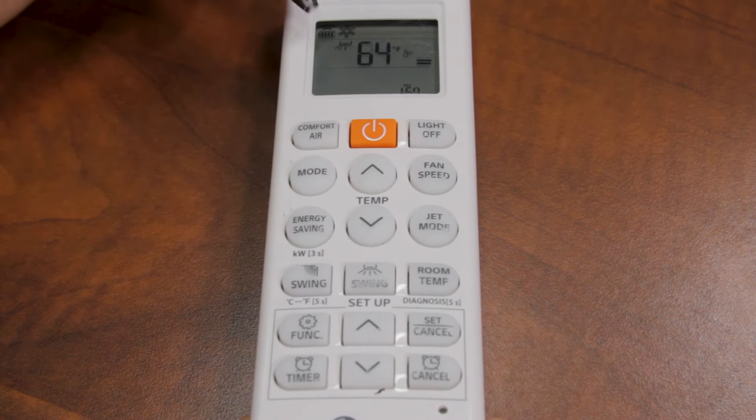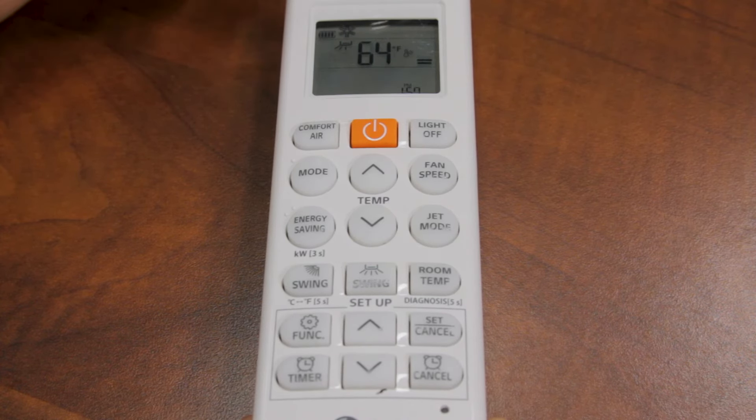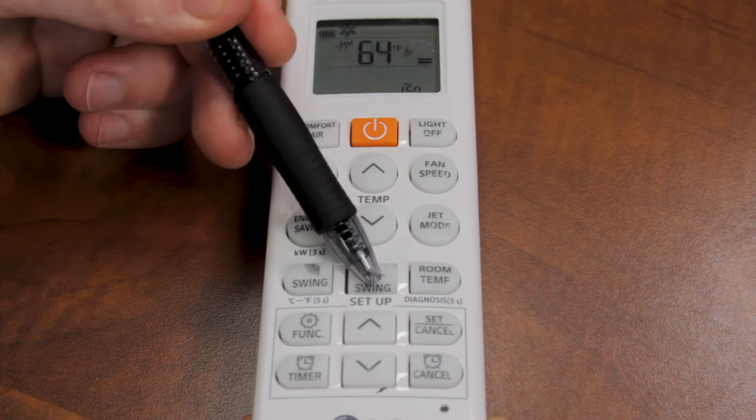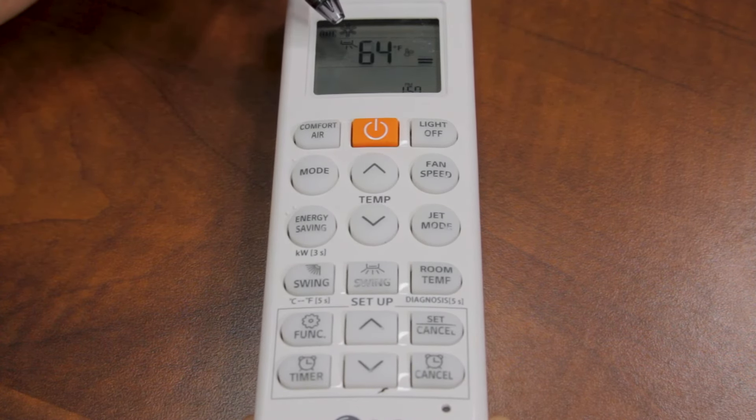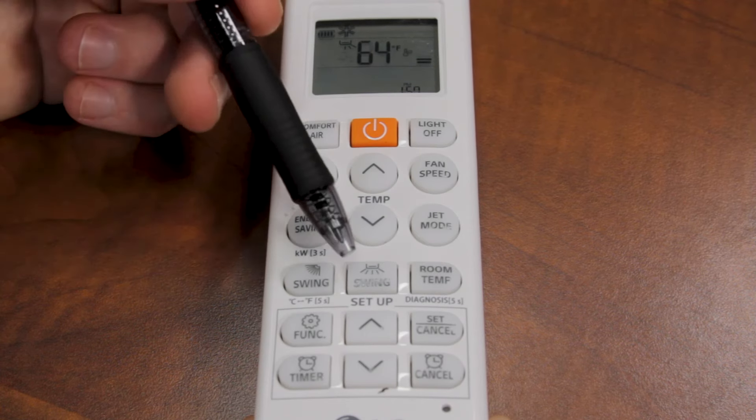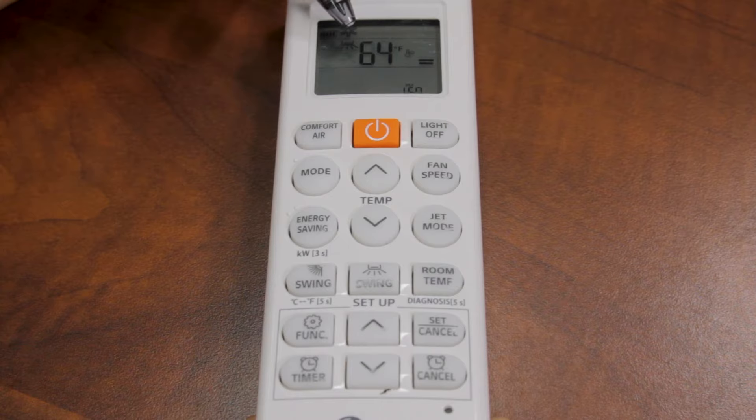Once you go all the way from left to right, you're going to get three lines pointing to the left. This is the fan oscillating but directing air to the left side of the room. Then it's going to be three bars to the right, oscillating but directing air to the right side. Press it one more time, and it's going to oscillate completely from left to right.